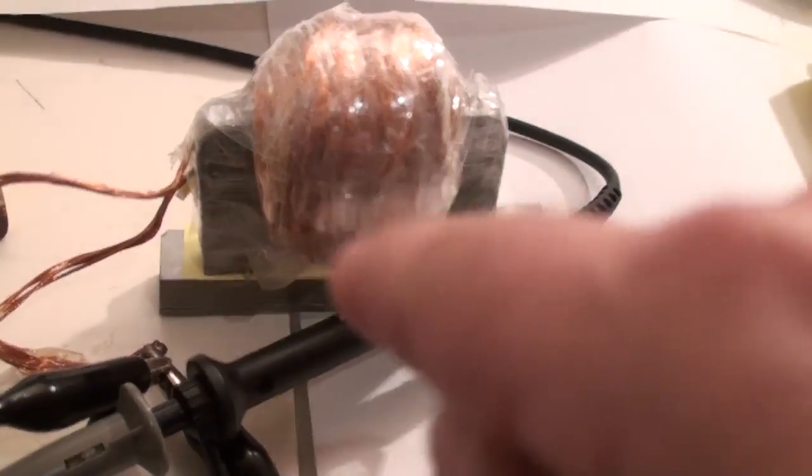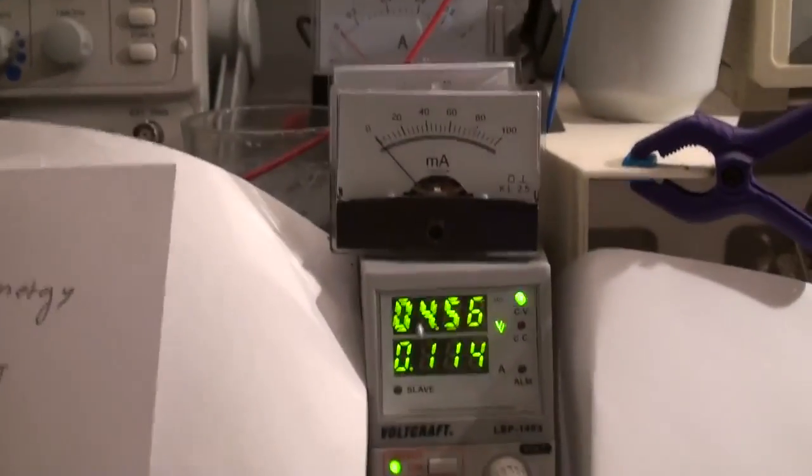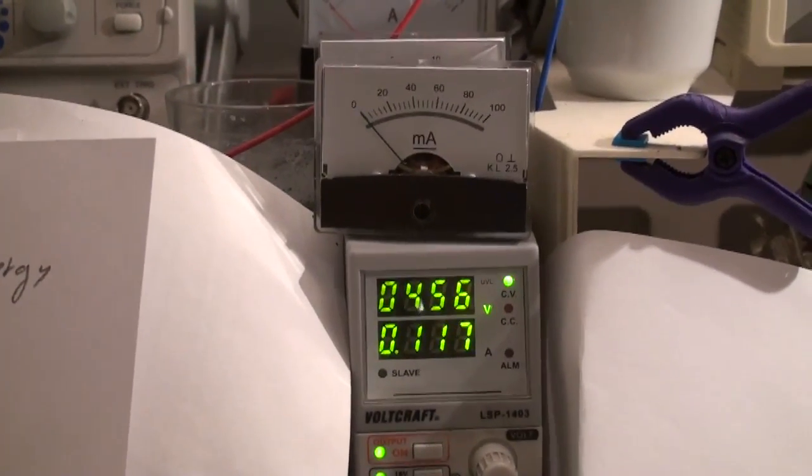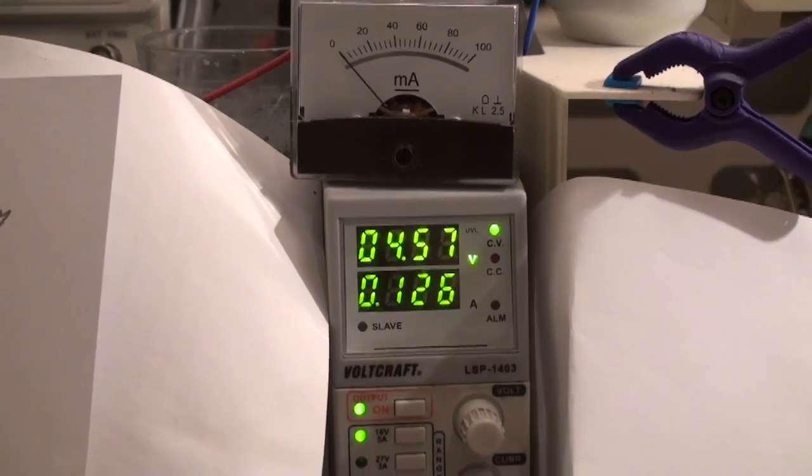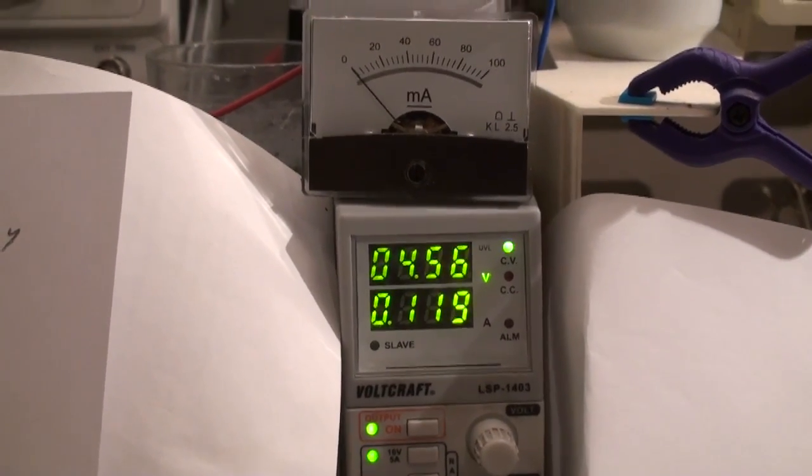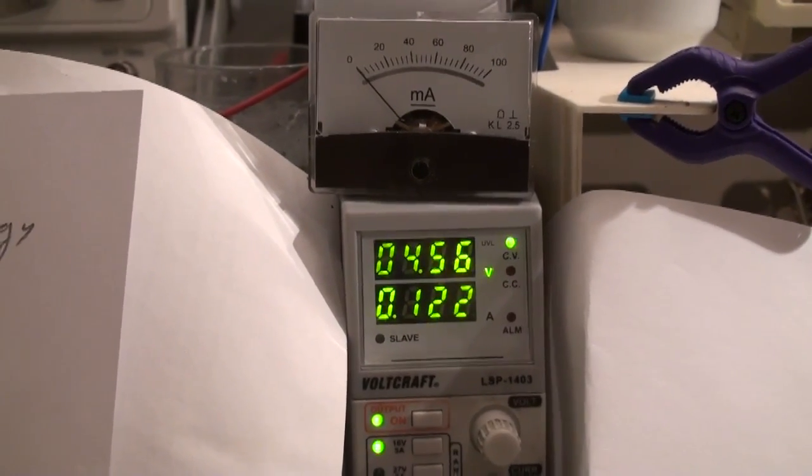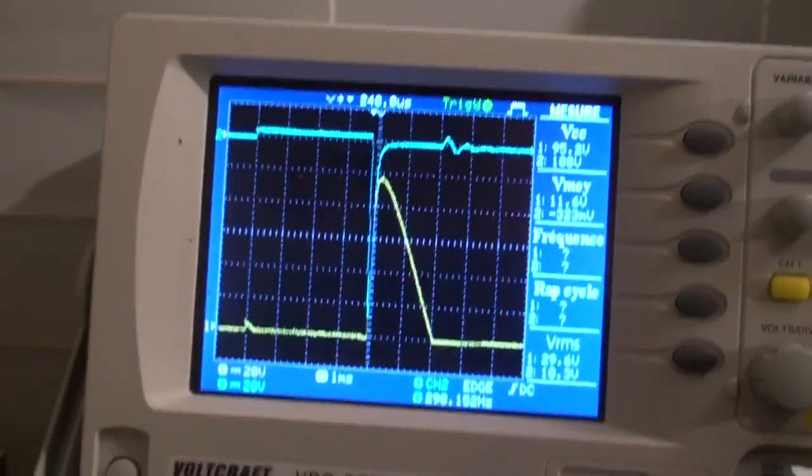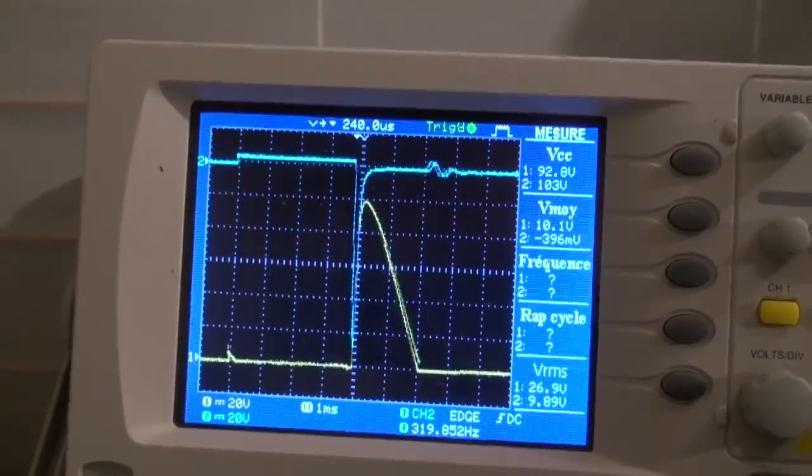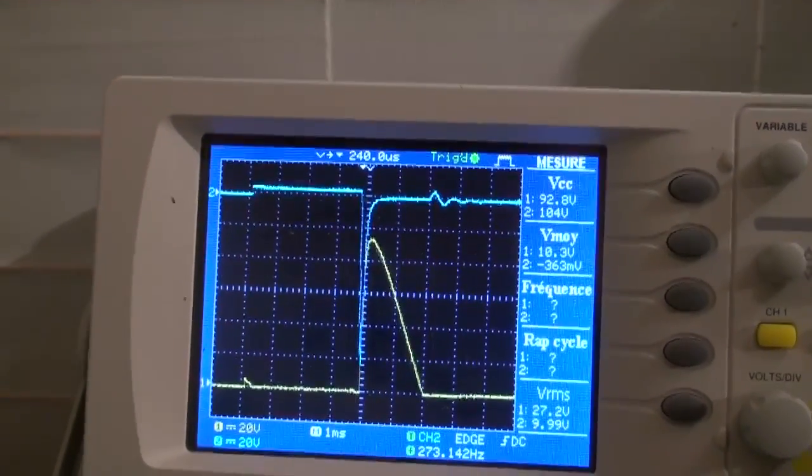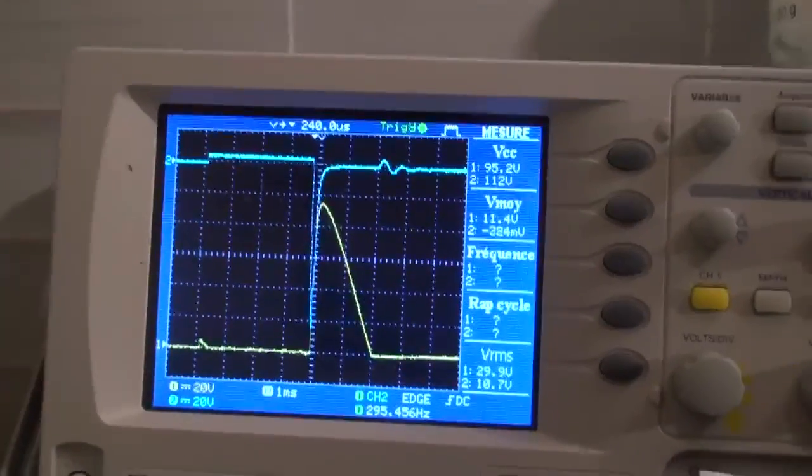I will now put this coil on a metal piece like this with a small air gap, just a small yellow paper. We see that the speed is going down but we retrieve the original 120 milliamps, and we retrieve the almost normal trace here on the assistant coil.